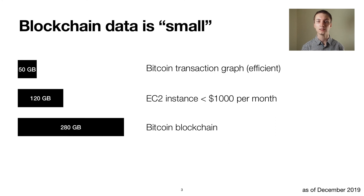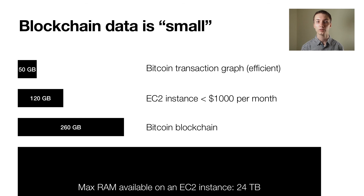Now, 280 gigabytes for the Bitcoin blockchain sounds like a lot of data, raising the question whether we need to build a distributed system to handle it. But, as it turns out, if we exclude data unnecessary for most scientific analyses, such as transaction signatures, and apply some optimizations and transformations, we can easily fit the core transaction graph into the memory of a single commodity EC2 instance that you can get for under $1,000 per month. With cloud providers offering instances with up to terabytes of memory, we expect that we can scale vertically for the foreseeable future, allowing us to build a tool that runs on a single machine rather than having to design a distributed system.